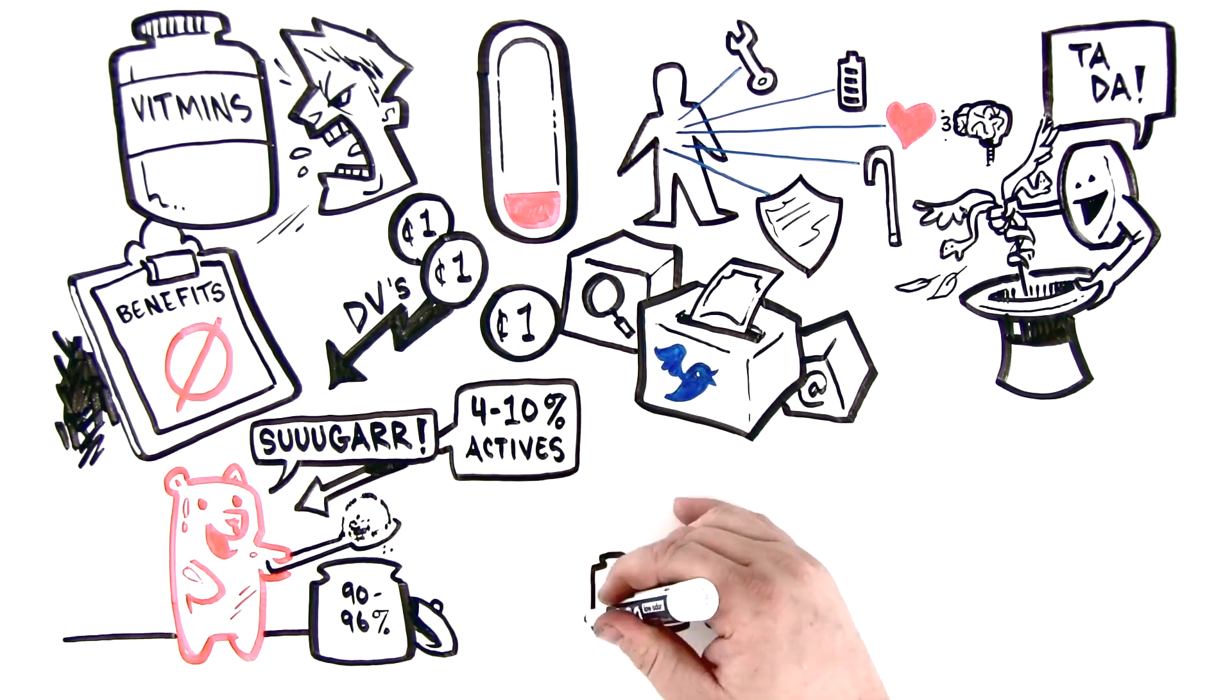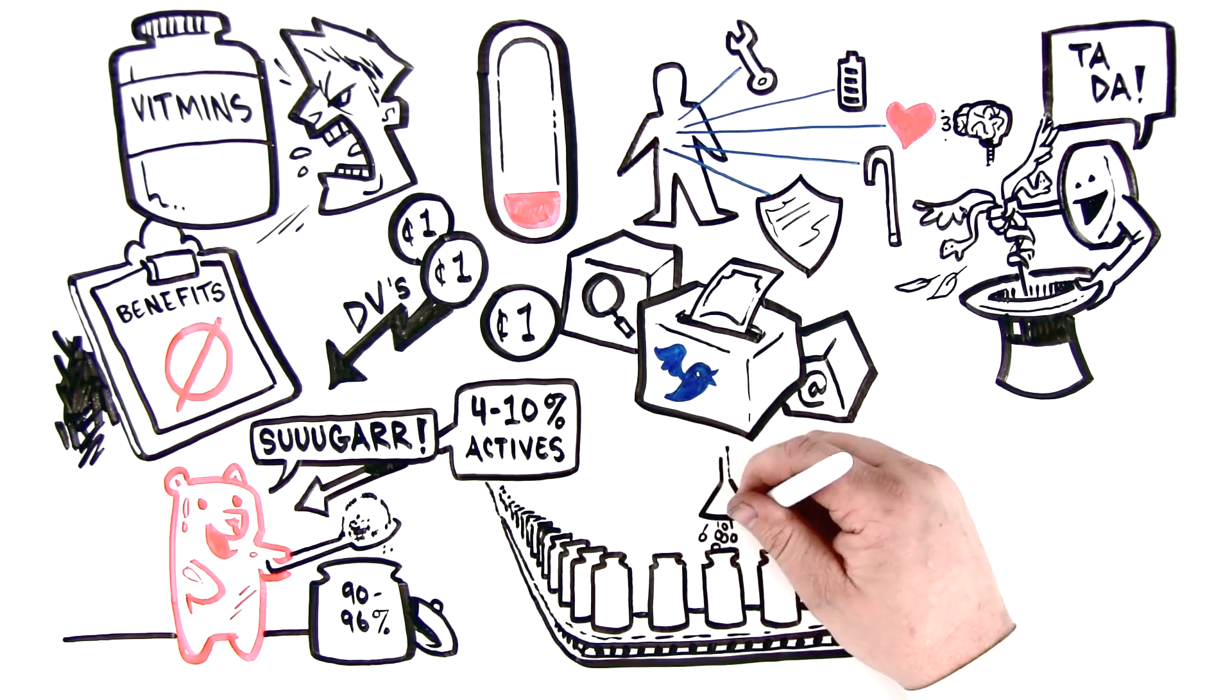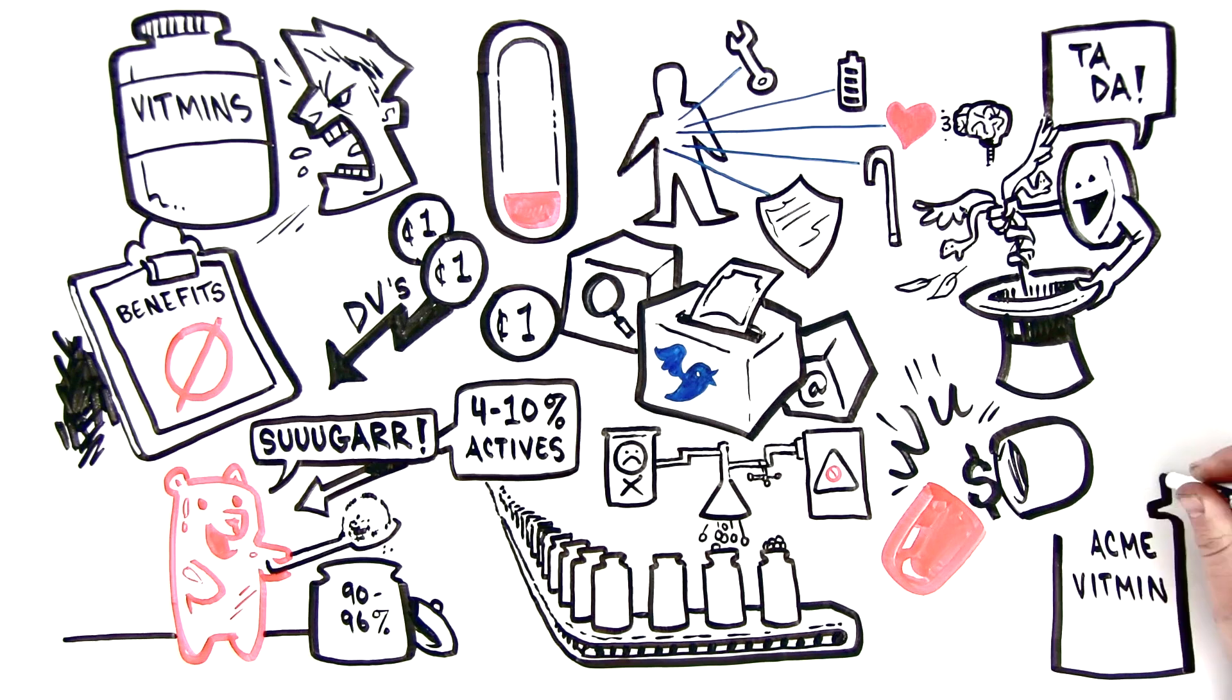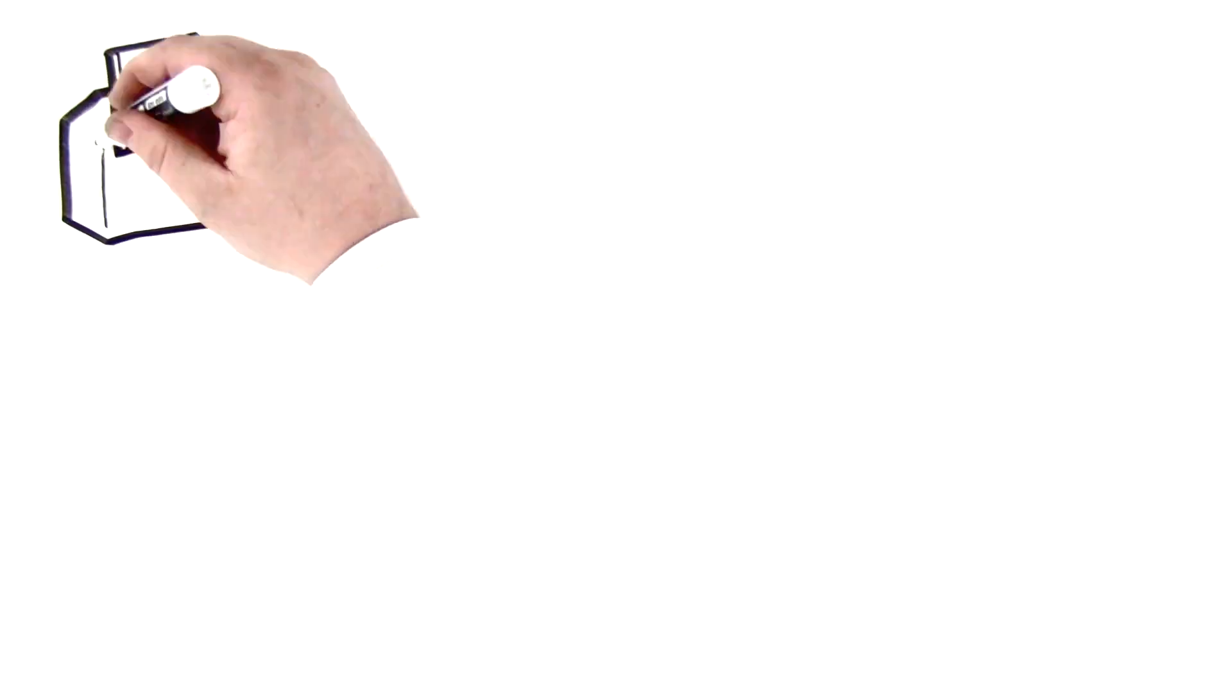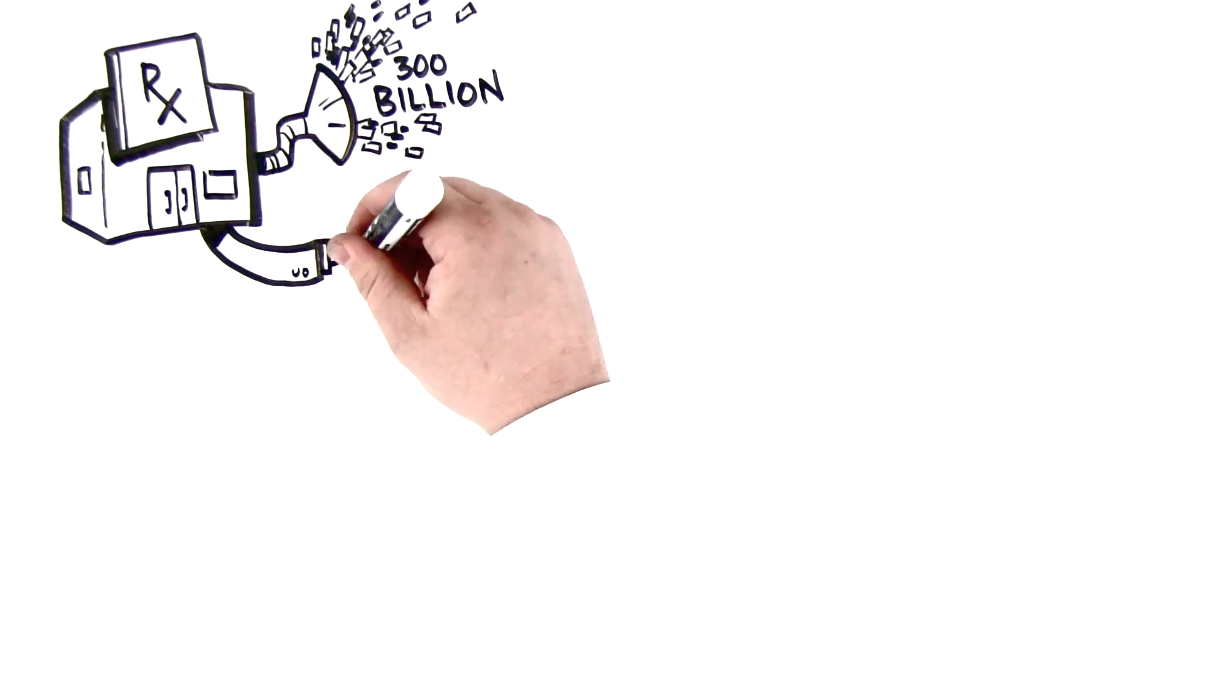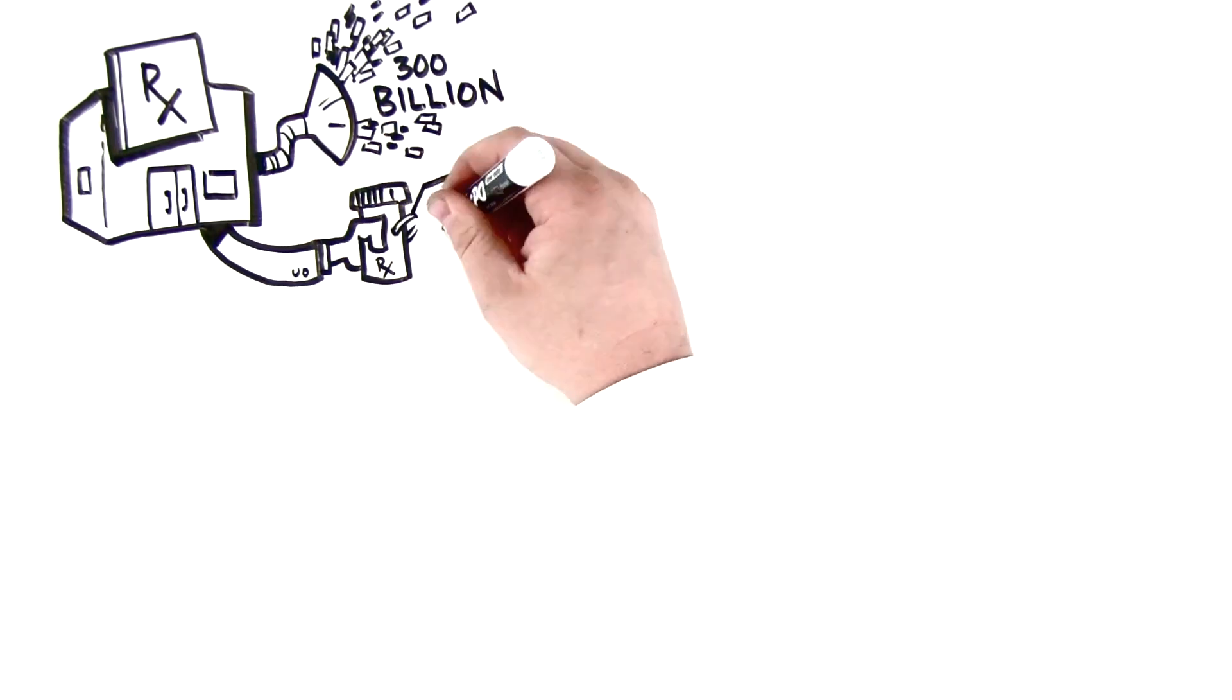The typical multivitamin is a mass-produced, rock-hard tablet with numerous chemicals and is sold by multi-billion-dollar drug companies and store knock-off brands. These drug companies and retailers generate over $300 billion a year when you become ill by selling you expensive drugs.